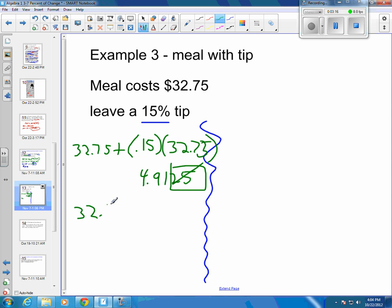So we're going to take the $32.75, and we're going to add on our $4.91 tip. So we're going to take 4.91. We're going to add it to $32.75, and we get $37.66 you're going to pay for that meal.